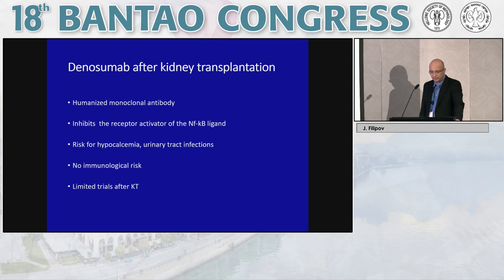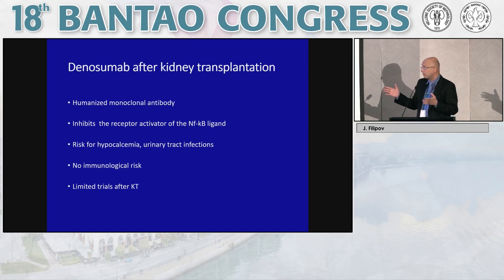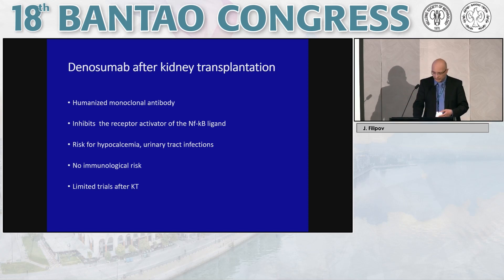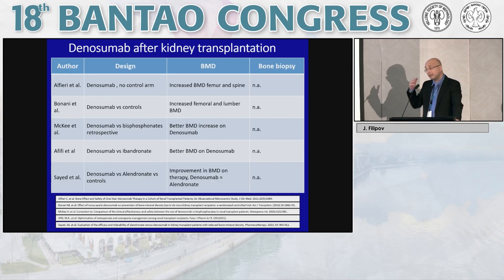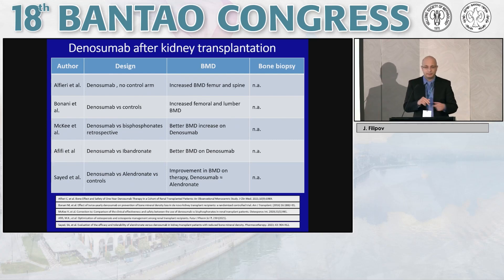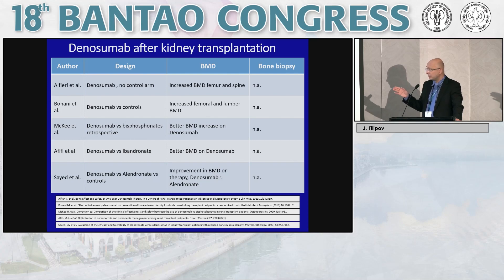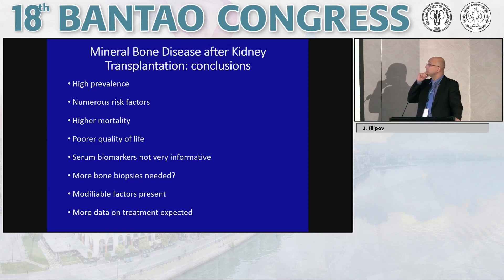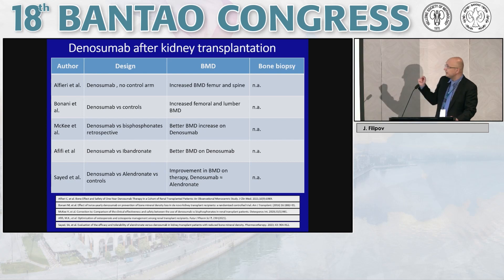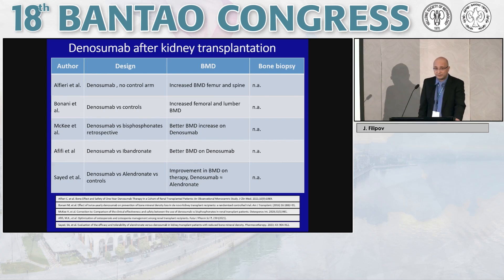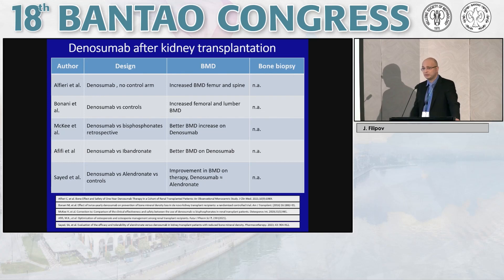Denosumab has been evaluated for immunological risk — none identified — as well as risk for hypocalcemia and urinary tract infections. In kidney transplant recipients, denosumab has been proven to increase bone mineral density. Comparison studies suggest denosumab is superior to bisphosphonates. However, bone biopsy data are lacking, so the true risk for adynamic bone disease with denosumab remains uncertain.